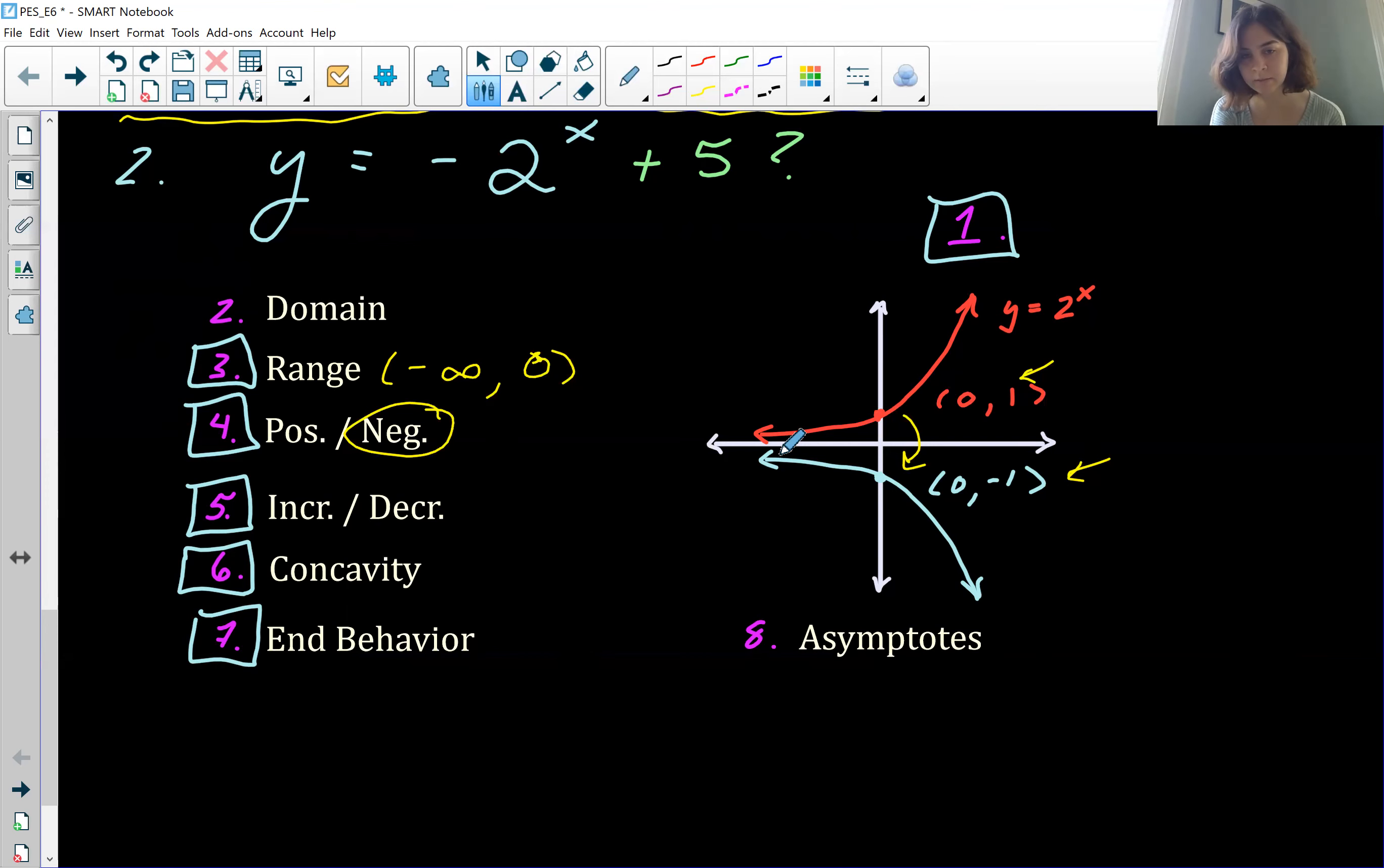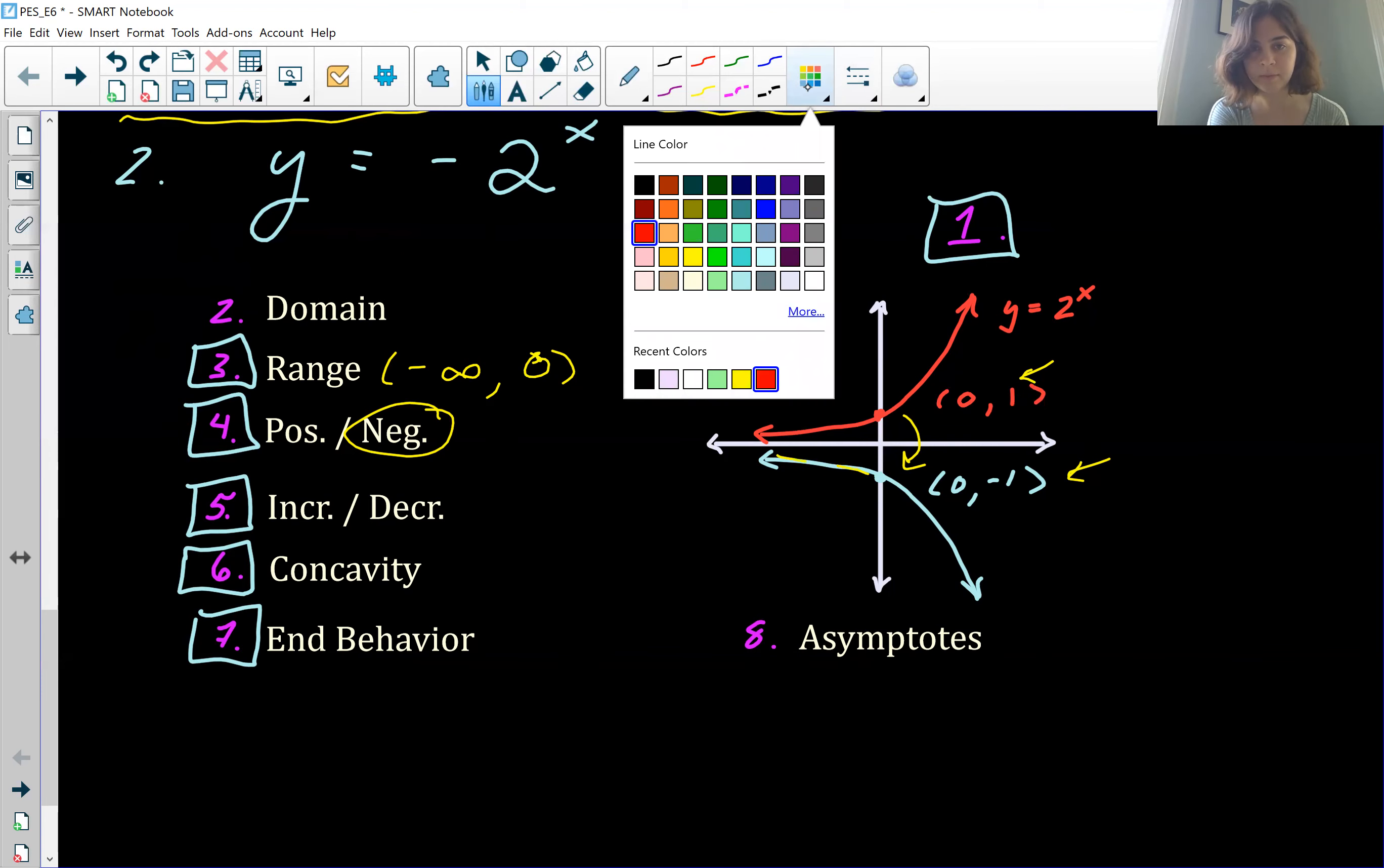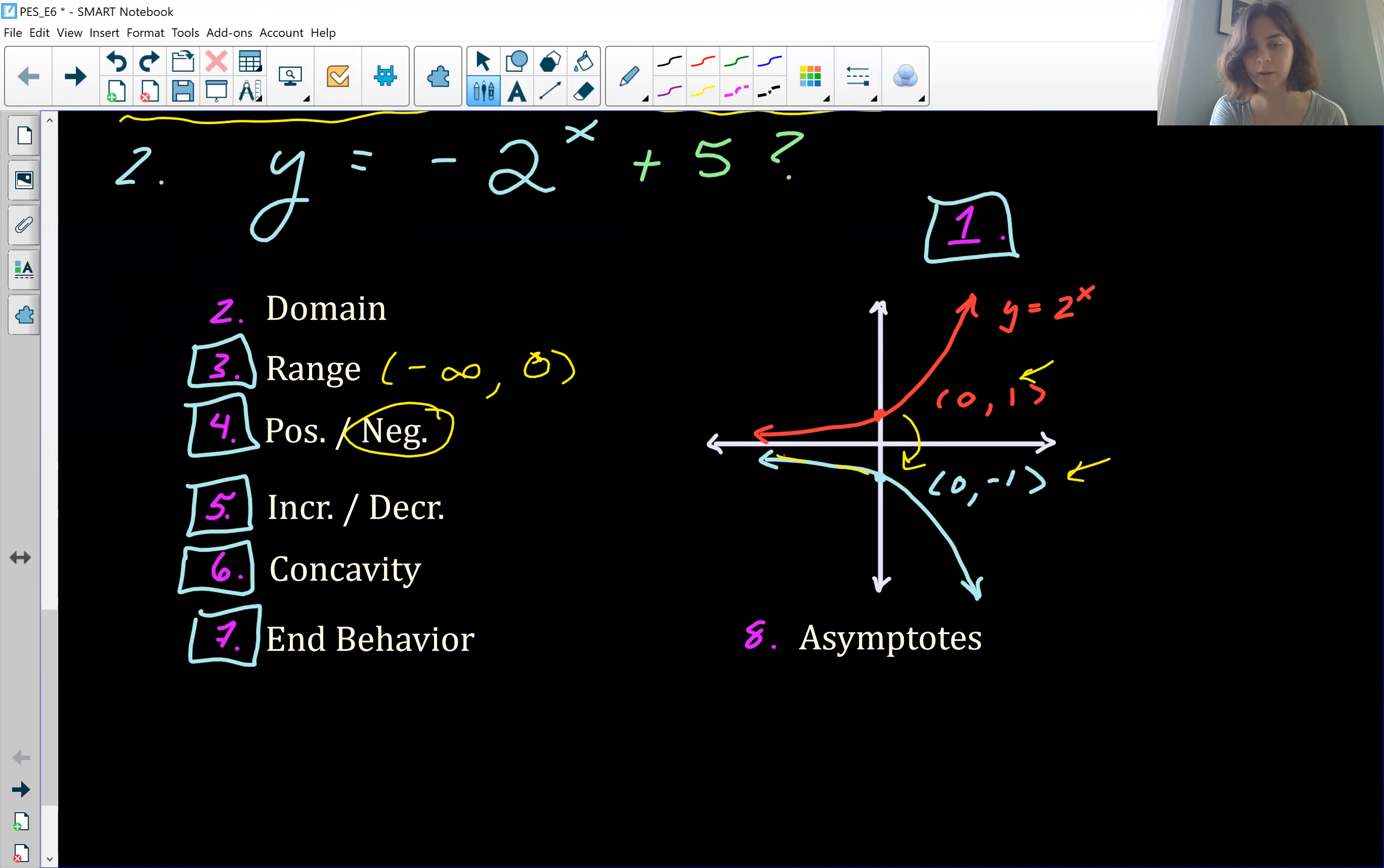So our original graph is increasing. But let's take a look at this. If we draw our tangent lines, or just lines if you want to call them that, on the new graph, we see that our slopes are always, always negative. So this graph is going to be decreasing. And then that also affects the concavity. We see that it's concave down like a frown. So we would say concave down.